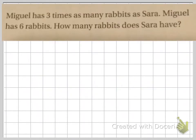Our next problem is a bit trickier. Let's read it. Miguel has 3 times as many rabbits as Sarah. Miguel has 6 rabbits. How many rabbits does Sarah have?